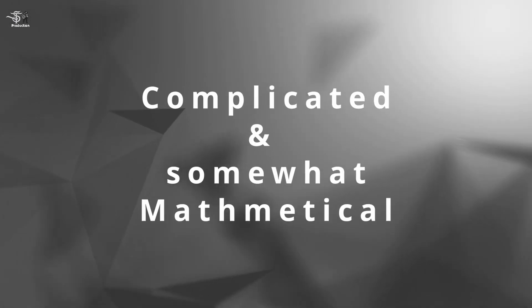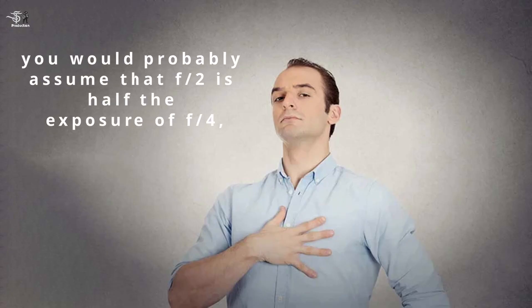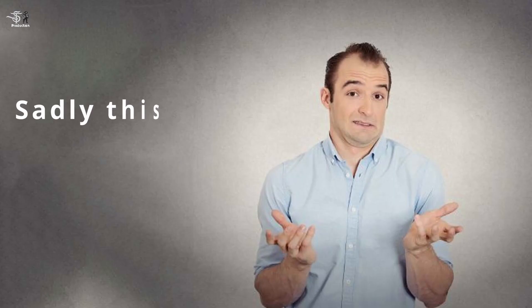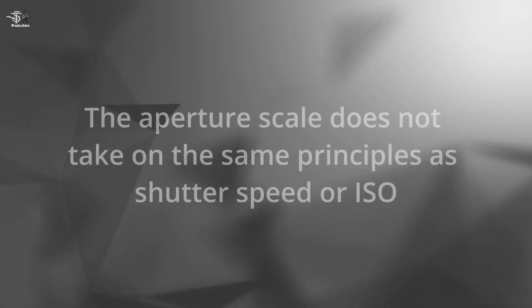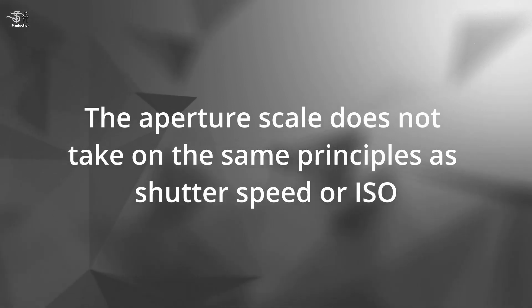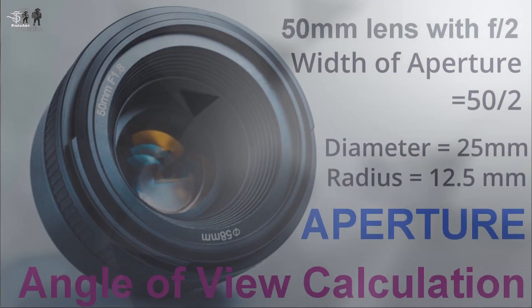Aperture — I'm afraid this is where things get a little bit complicated and somewhat mathematical. If you use the logic explained above, you'd probably assume that after each stop the exposure halves at f4, but sadly this is not so. You may be scratching your head at this, but it will become clear if you can just stick with it. The aperture scale does not follow the same principles as shutter speed or ISO because of how the measurement is taken.